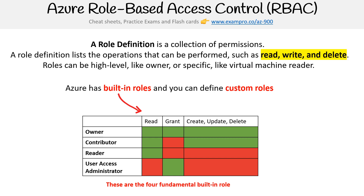Looking at the graphic with the green and red indicators: as an owner, you can read, grant, create, update, and delete resources — you can do everything. As a contributor, you can read, create, update, and delete, but you can't grant access or allow other users to gain access to your resources. A reader, as the name implies, can only read resources — they can't create, update, delete, or grant access to other users. And a user access administrator only grants access; their job is to give access to other resources, but they can't do anything themselves. That is role-based access controls.